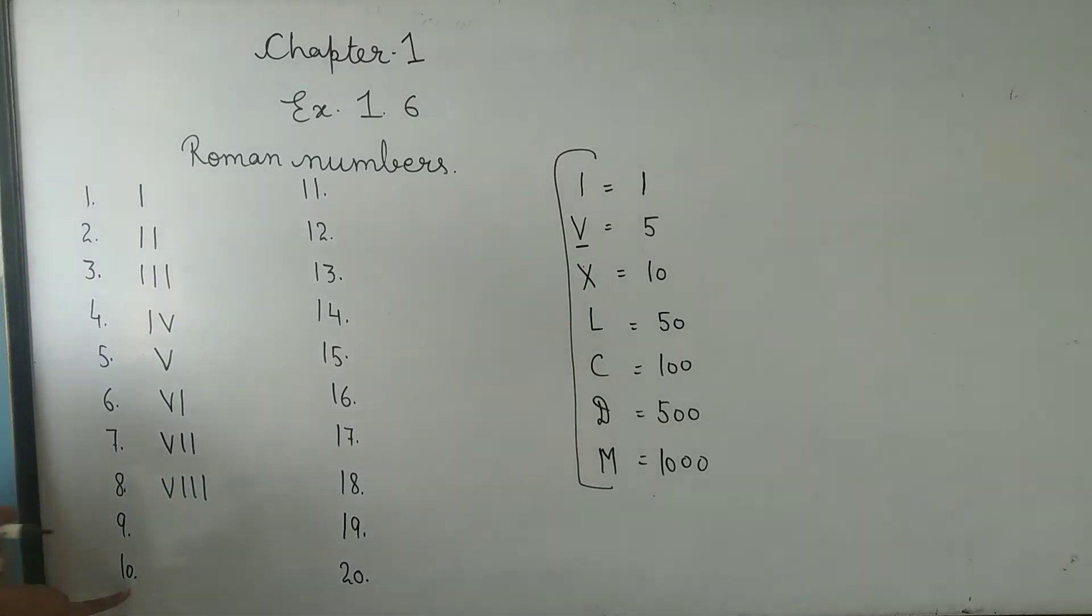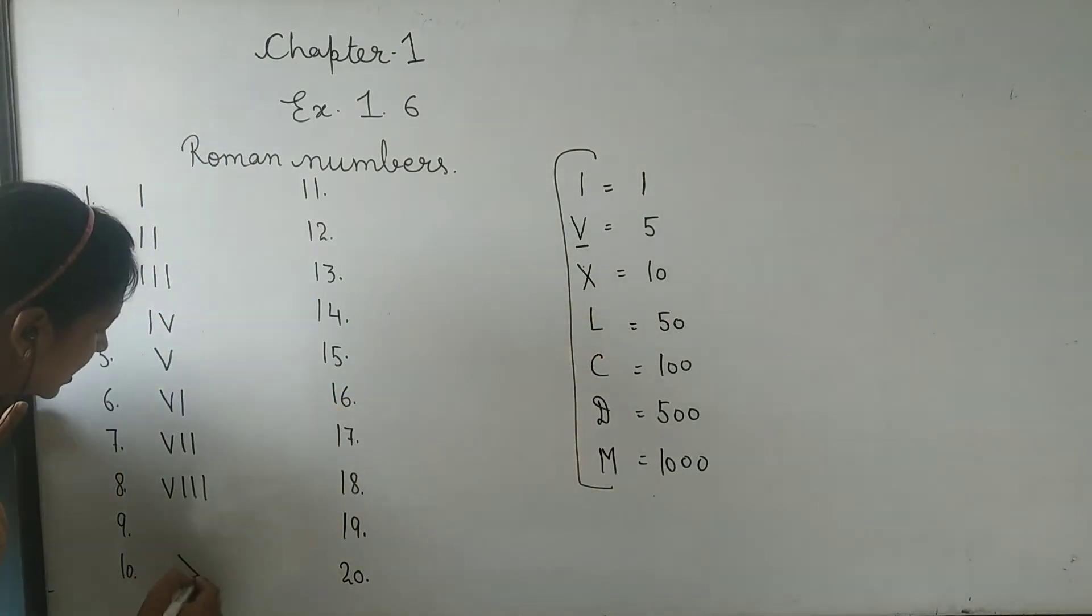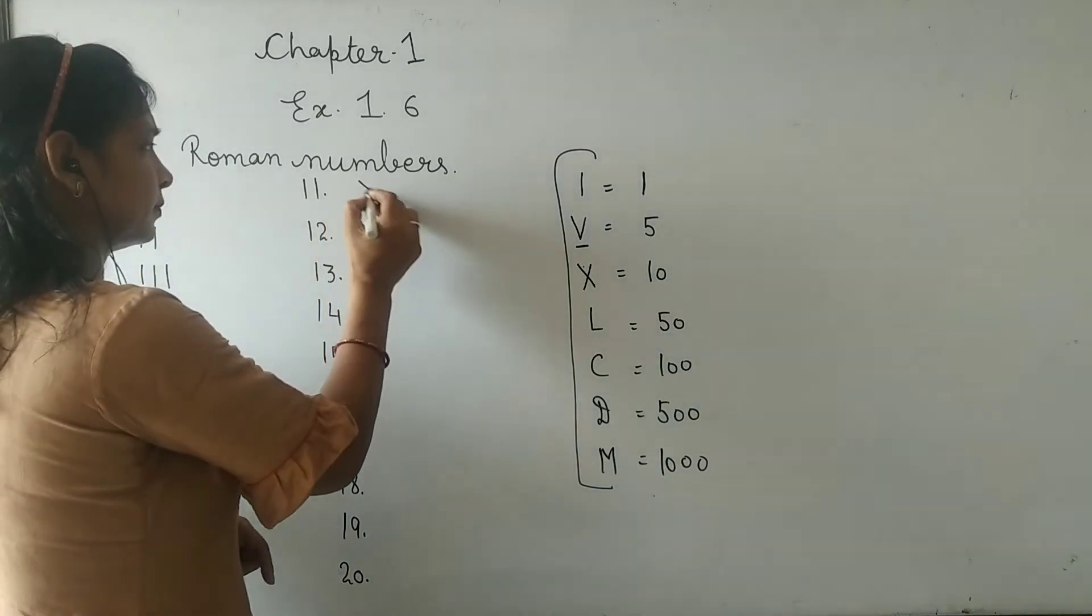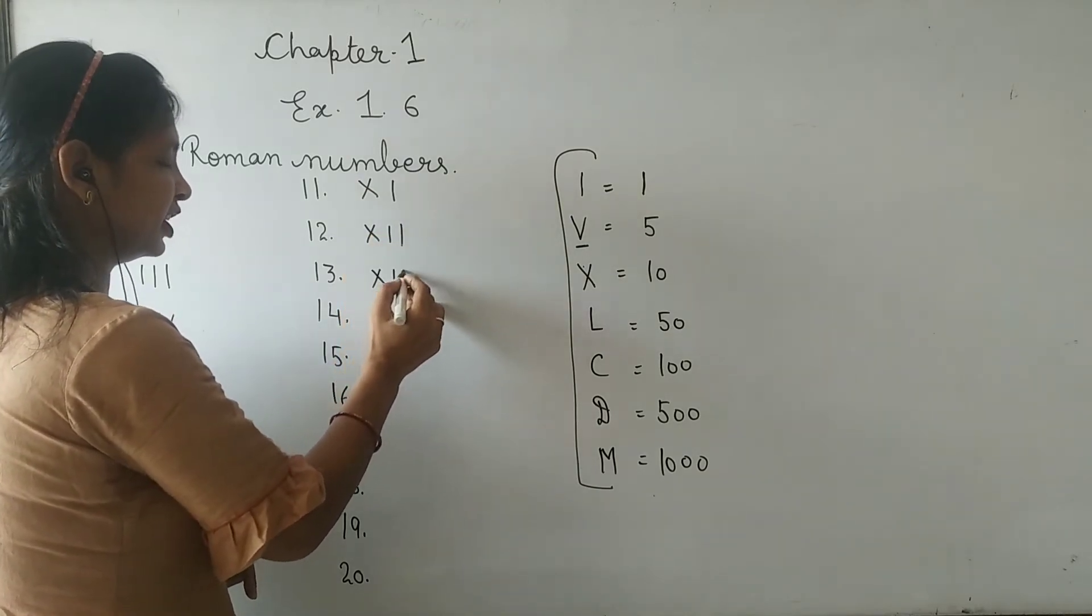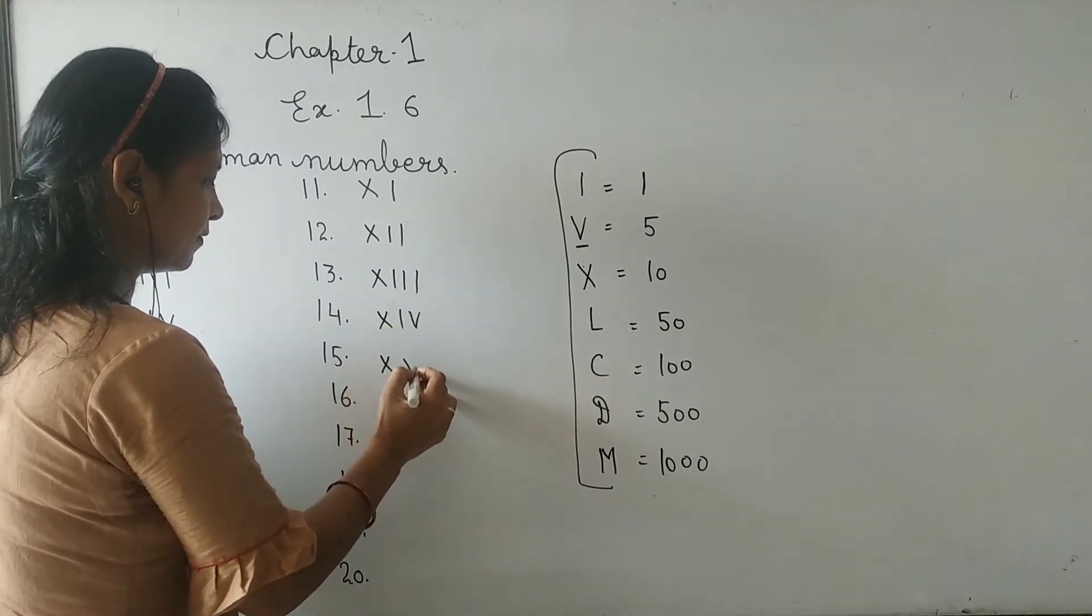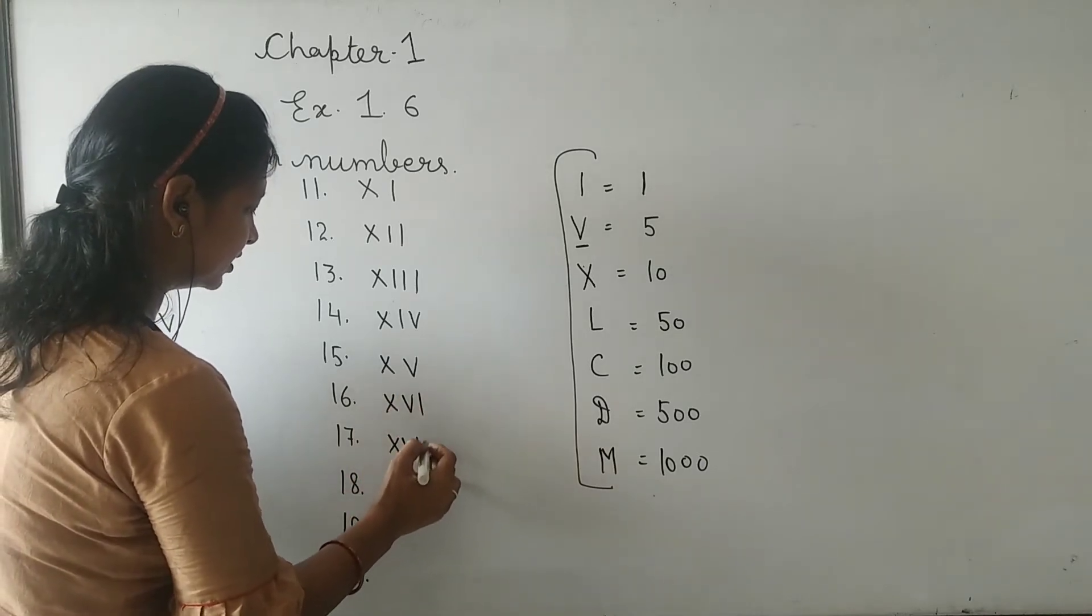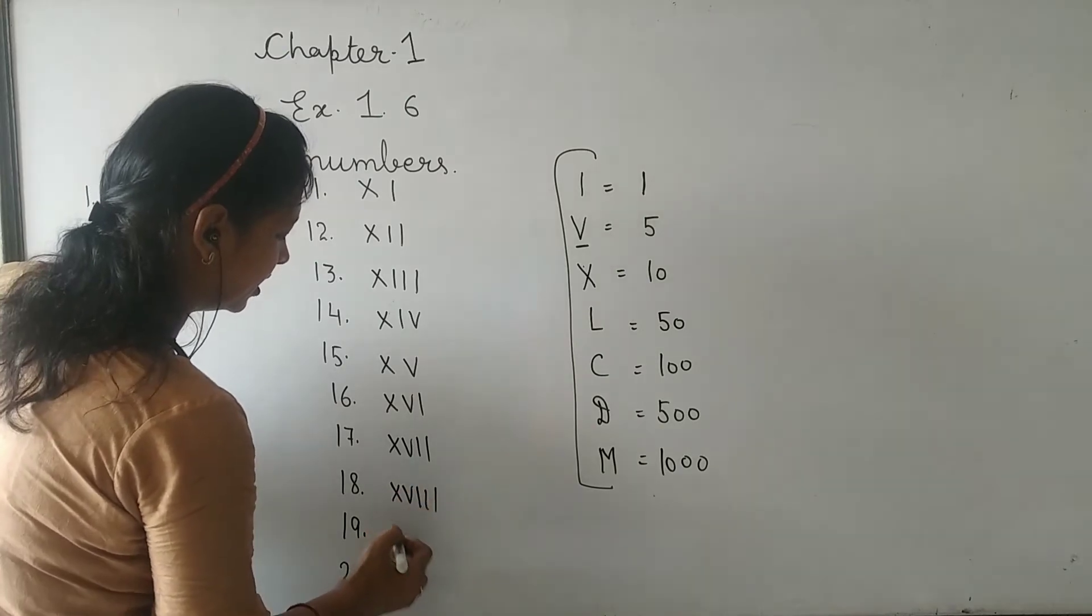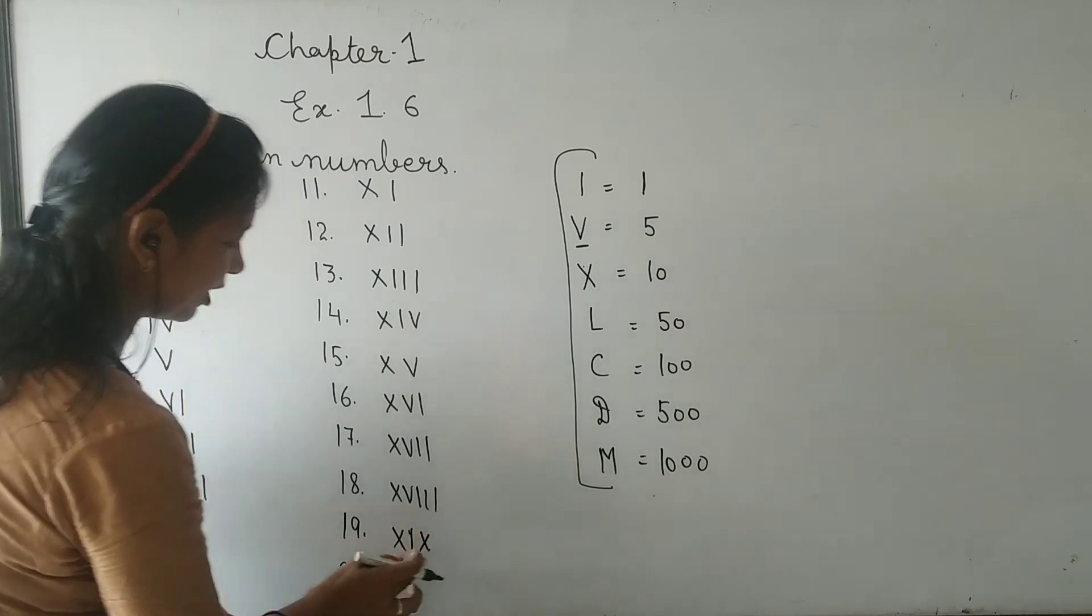10 is X. 11 is X and I, which is XI. 12 is XII. 13 is XIII. 14 is XIV. 15 is XV. 16 is XVI. 17 is XVII. 18 is XVIII. 19 is XIX.